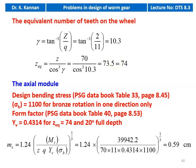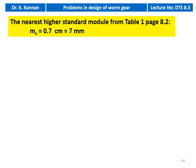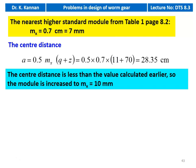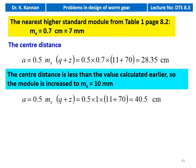We standardize the module, taking the next higher module: MX = 0.7 cm (7 mm) from table 1, page 8.2. The center distance A = 0.5 × 0.7 × (11 + 70) = 28.35 cm, which is less than the previously calculated 34.4 cm. So we increase the module to MX = 10 mm (1 cm). New center distance A = 0.5 × 1 × (11 + 70) = 40.5 cm. This value is higher, so this is the actual module for the problem.